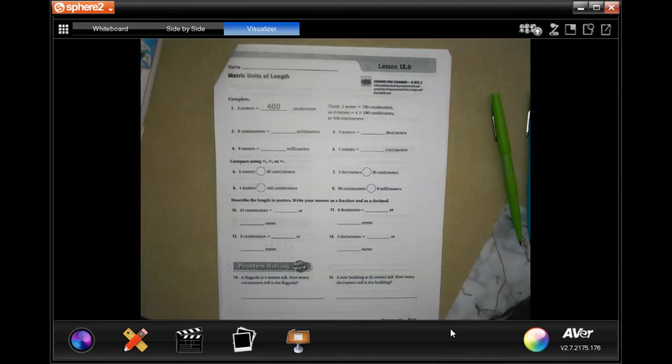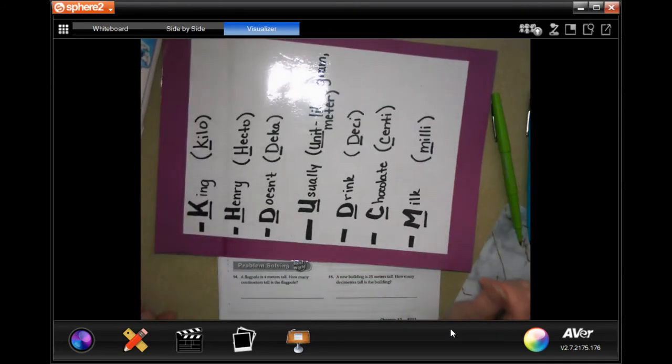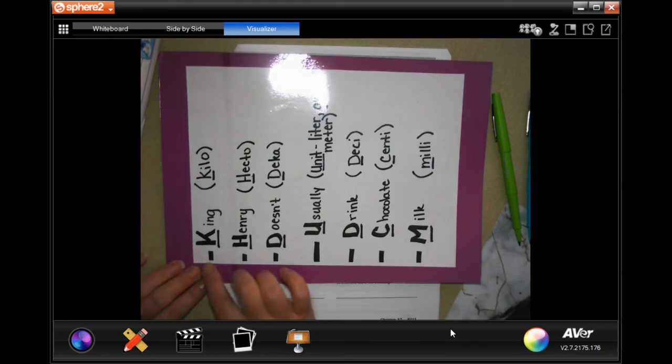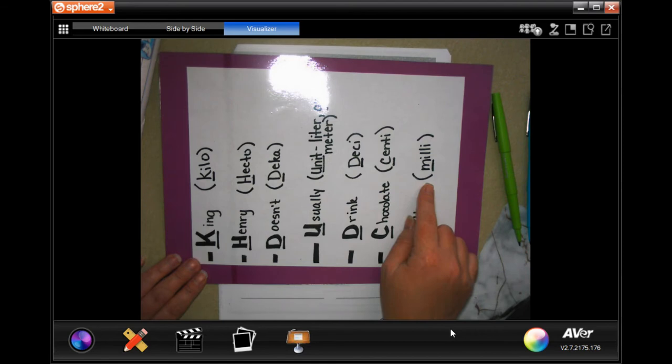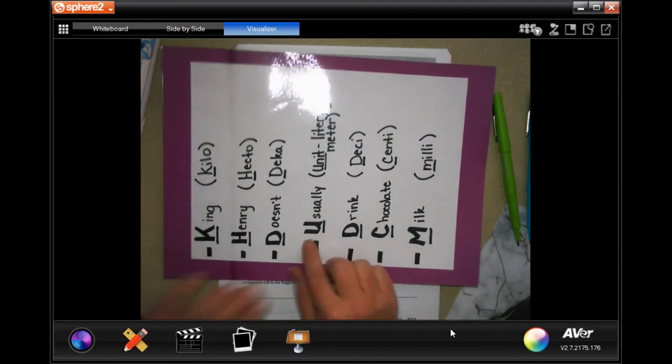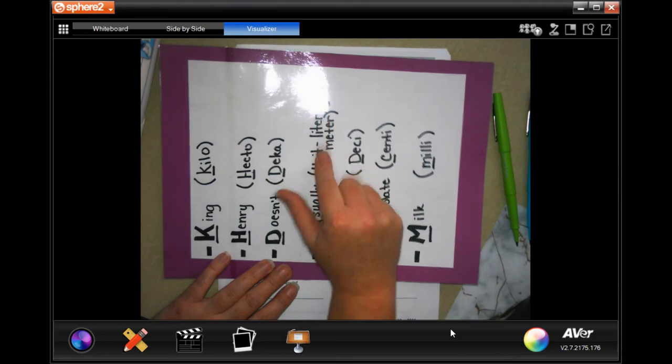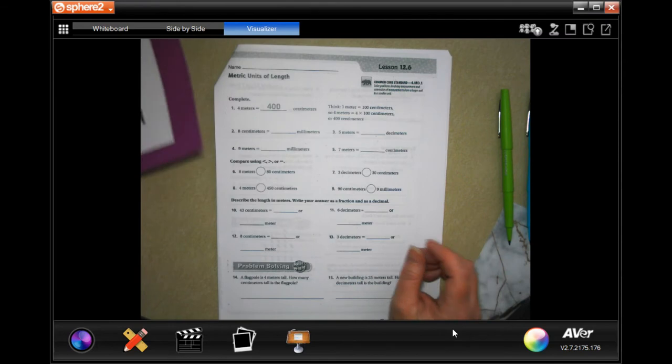Hey y'all, welcome to fourth grade chapter 12 lesson 6. We're going to go ahead and get started. This lesson we actually pull out our King Henry. We do King Henry doesn't usually drink chocolate milk, which helps us to remember the order of these guys. And the only thing that you need to remember is it usually is for units that's either liters, grams, or meters.